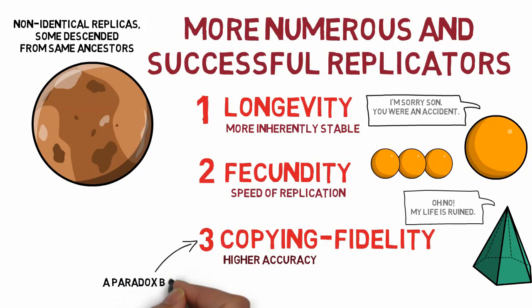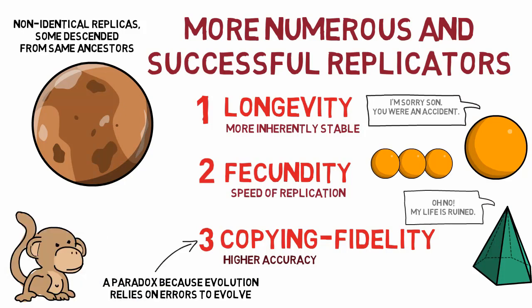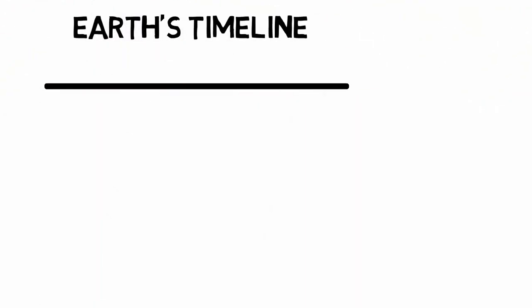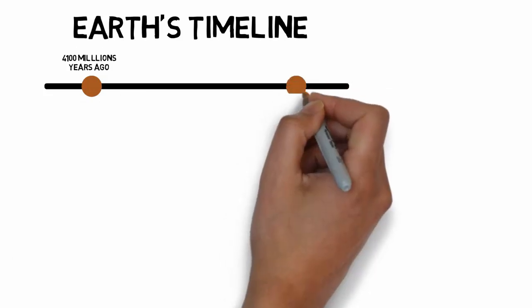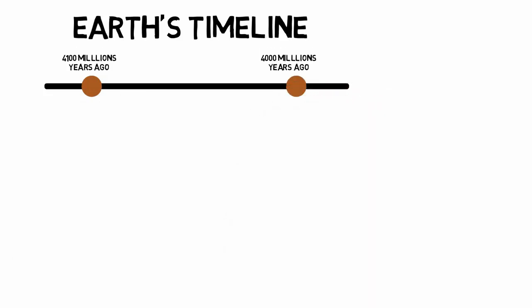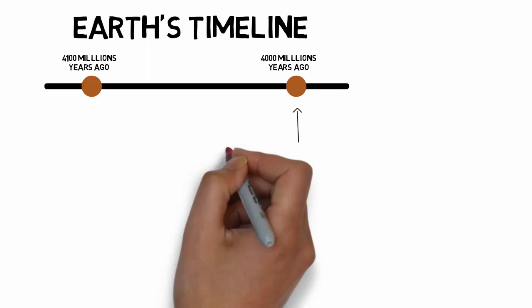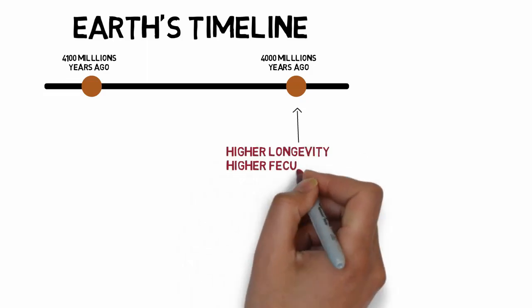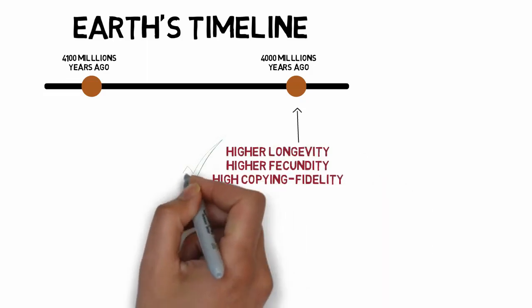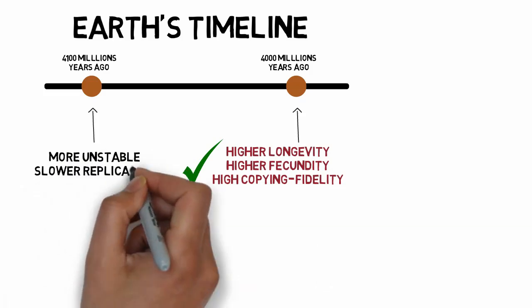Dawkins states that this may be paradoxical because evolution relies on errors to evolve, but argues that nothing actually wants to evolve. Evolution is something that happens despite the efforts of replicators to prevent it from happening. So, if we were to take a sample of the primeval soup at two different times, say millions of years apart, there should be a larger proportion of varieties with higher longevity, fecundity, and copying fidelity in the later sample than the earlier one.